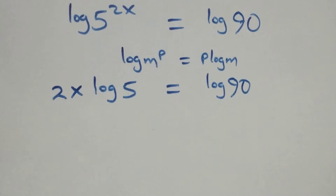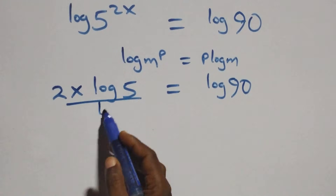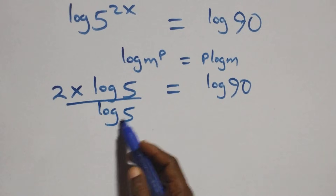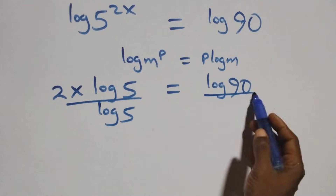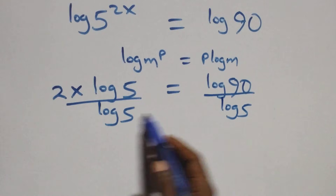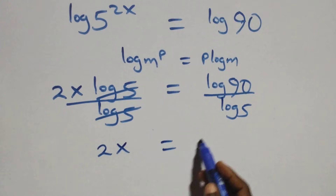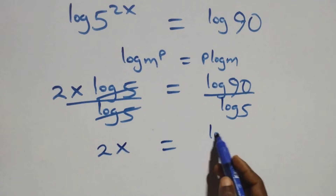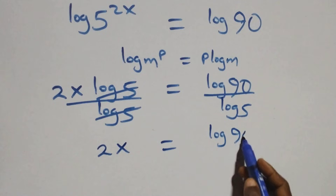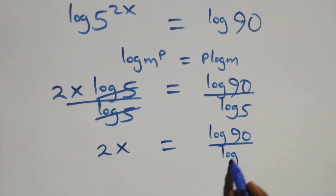At this next step, divide both sides by log 5. Divide this side by log 5, also divide this side by log 5. Log 5 cancels each other, and we have 2x equals log 90 over log 5.